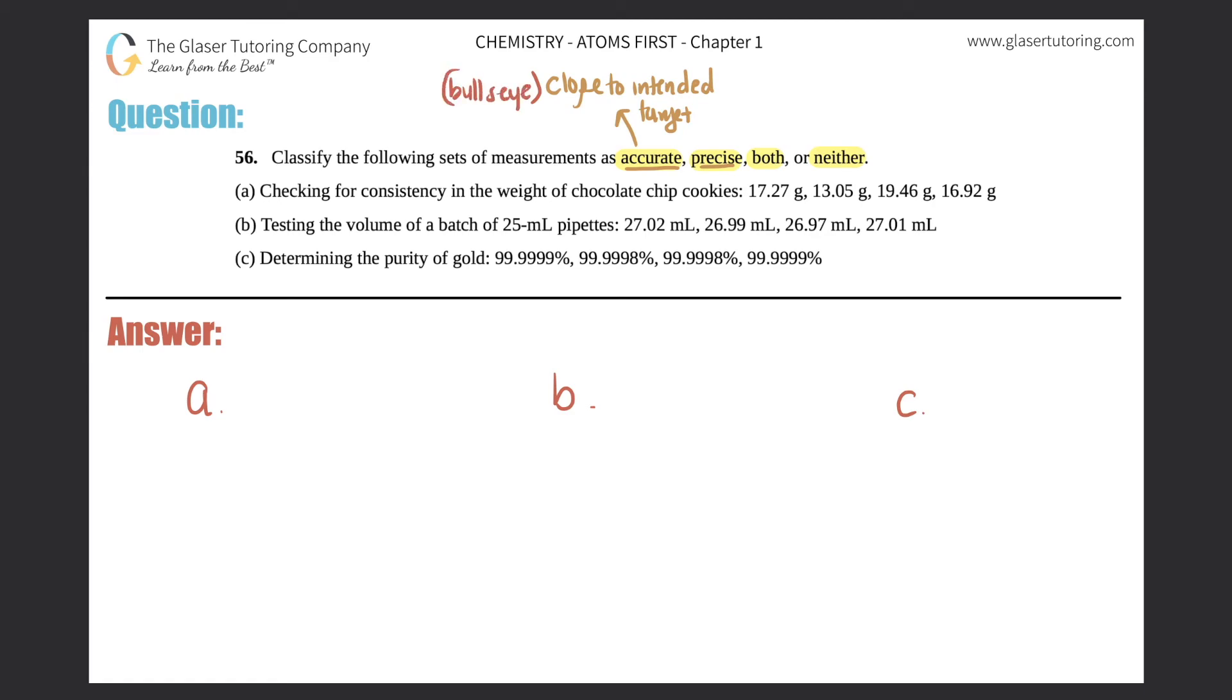It was like an archer contest. That's to check if you're accurate - if you're hitting the bullseye, that's the intended target. Precision has nothing to do with the intended target. It has everything to do with how your trials or shots, every time that you hit the bow and arrow and tried to get the bullseye, how close they are to each other. Being precise means that your trials, your experimental trials, are very similar to each other.